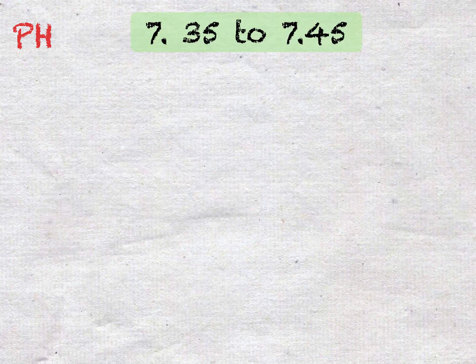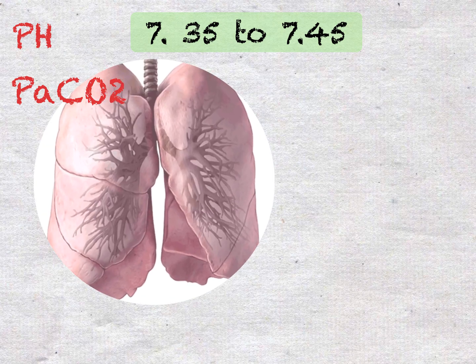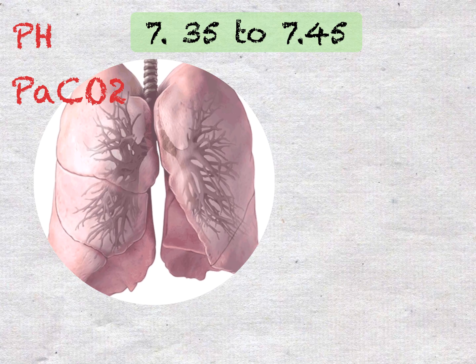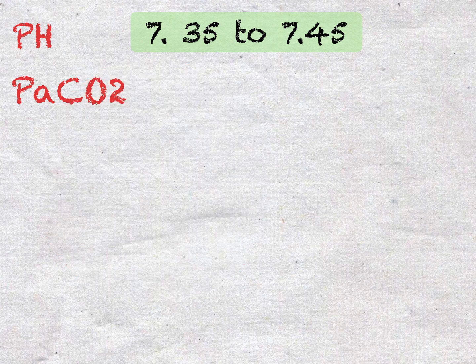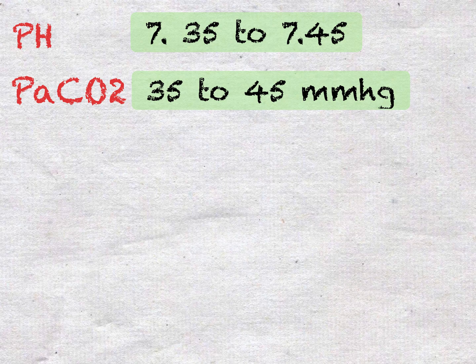The second value is the carbon dioxide level. Remember that carbon dioxide is regulated by the lungs, and this will tell you if the problem is respiratory in origin. The faster you breathe, the more you remove carbon dioxide; the slower you breathe, the more you retain it. It is measured as the partial pressure of carbon dioxide, or PaCO2, with a normal range of 35 to 45 mmHg.